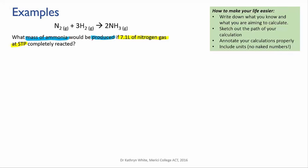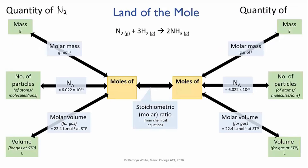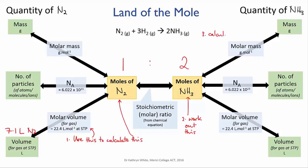So let's again sketch out the calculation path. We know the volume of nitrogen, that's 7.1 liters, and we're going to use the molar volume, 22.4 liters per mole, to convert that into moles of nitrogen. The mole ratio from the equation will give us the moles of ammonia produced, and we'll then need to work out the molar mass of ammonia so that we can convert the moles to a final mass of ammonia. So let's try that out.